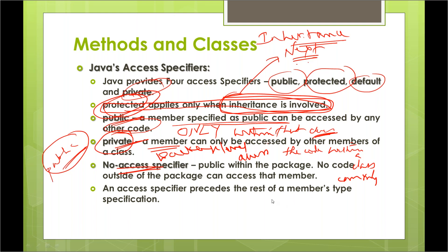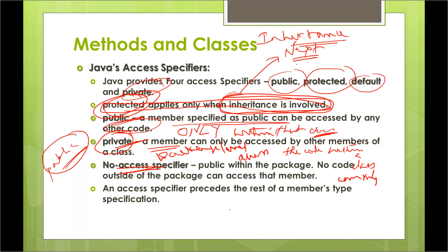It depends on your definition. If you want to define each class in a separate file, there should be one particular class which is public. If you want to save Java code in a particular file — say A.java — you should have one particular class which is public.